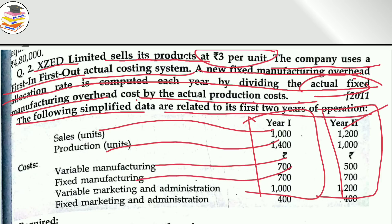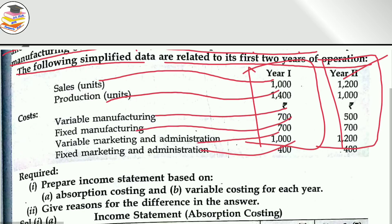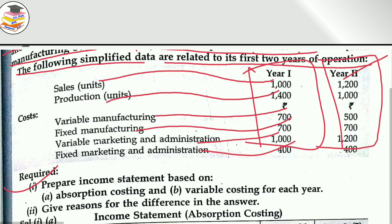Fixed manufacturing costs are given. You have to prepare an income statement. You will see that you need to prepare the income statement based on absorption costing and variable costing.